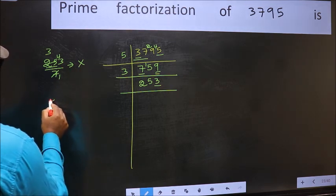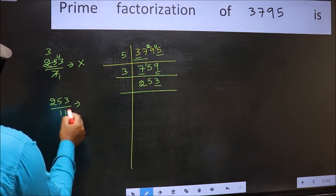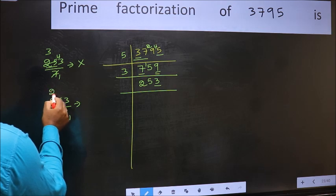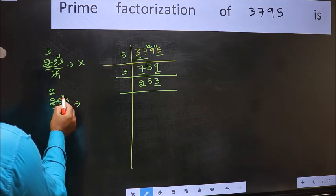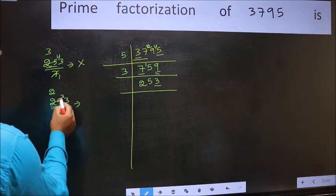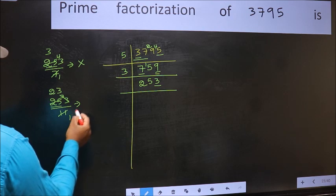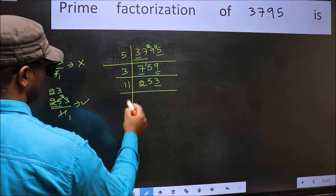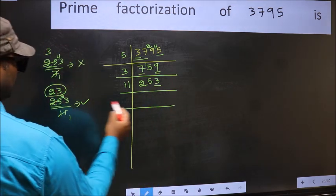Next prime number 11. A number close to 25 in 11 table is 11 2's 22. 25 minus 22 is 3, 3 carried forward 33. When do we get 33 in 11 table? 11 3's 33. No number has been left out. So this is divisible by 11. So 11 here. And here we should write this number 23.